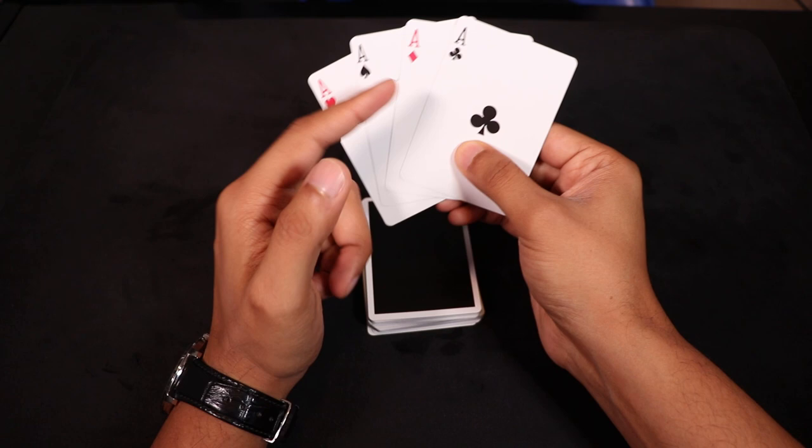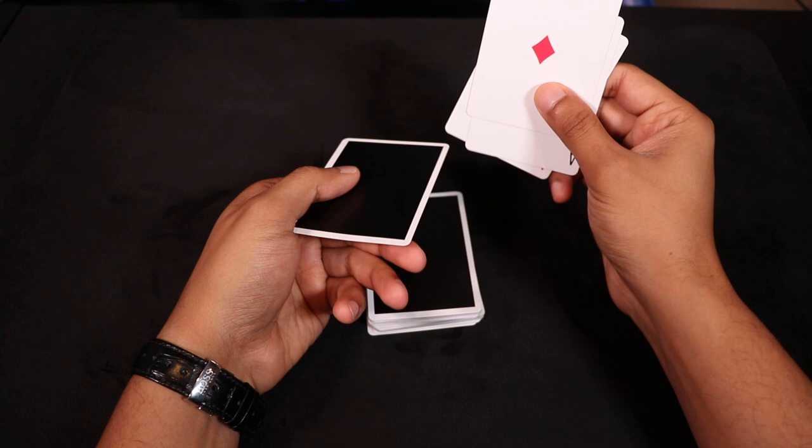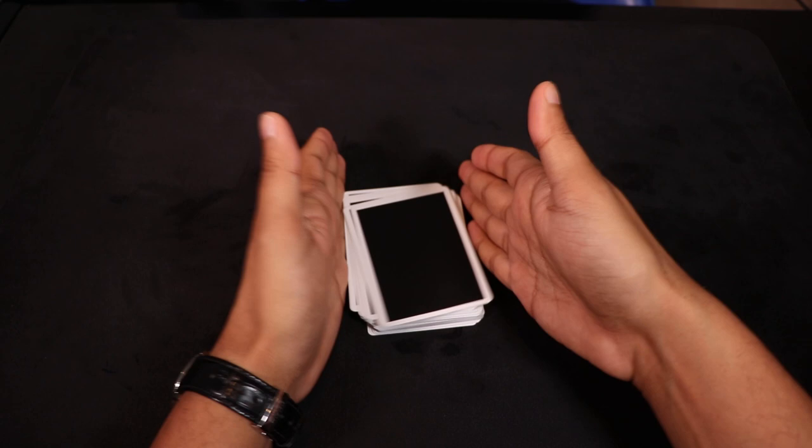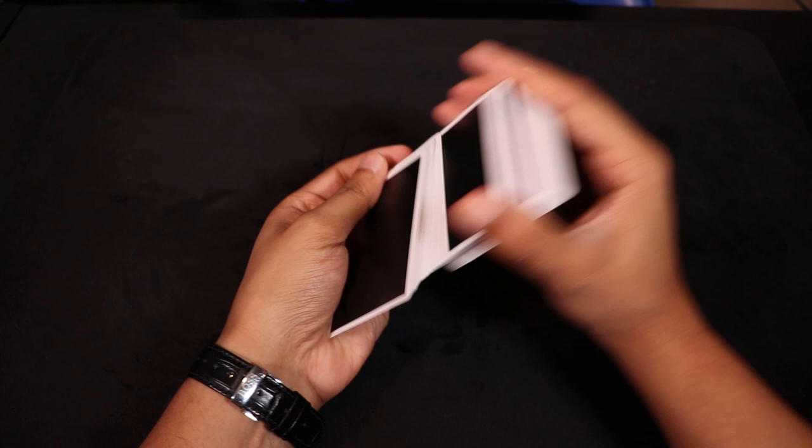Now there is a bit of setup involved for this trick, so you want to start off by getting the aces in the order that you're going to call them out loud. So like I did hearts, spades, diamonds, and clubs, so I have them in that order. So you're going to take those aces, you're going to take three more cards from the deck and put them right on top of the aces, and put this whole pile on top of the deck.